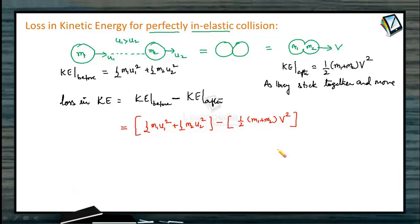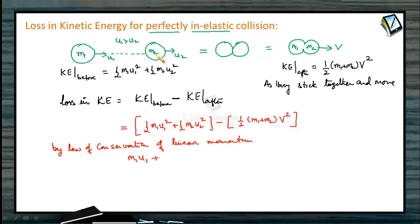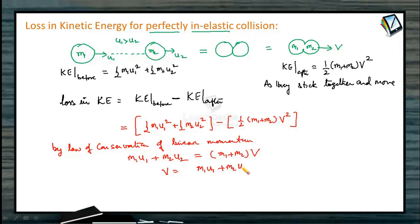Now we will calculate the value of v and substitute using the law of conservation of linear momentum. Initial momentum: m1 u1 plus m2 u2. After collision they combine together and move with common speed v: m1 plus m2 times v. So v equals m1 u1 plus m2 u2 divided by m1 plus m2.